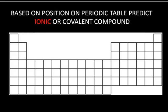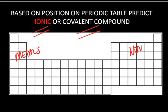Based on the position on the periodic table, you can predict whether a compound will be ionic or covalent. Metals and non-metals together in a compound will form an ionic compound. Non-metals with non-metals form covalent compounds — and that will be the subject of another video.